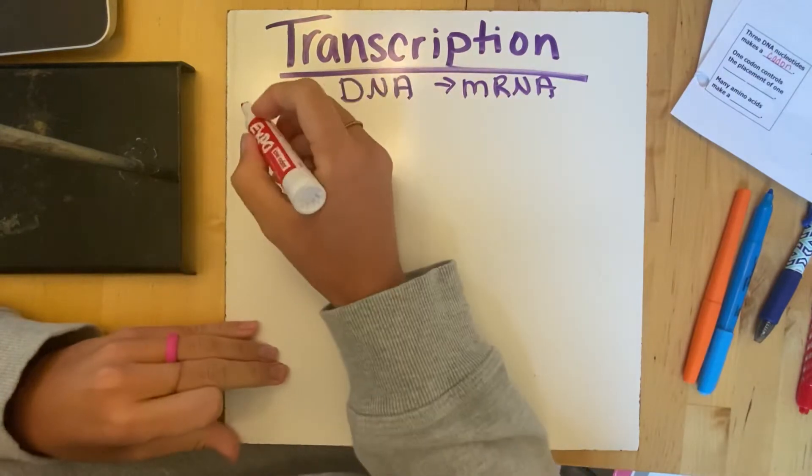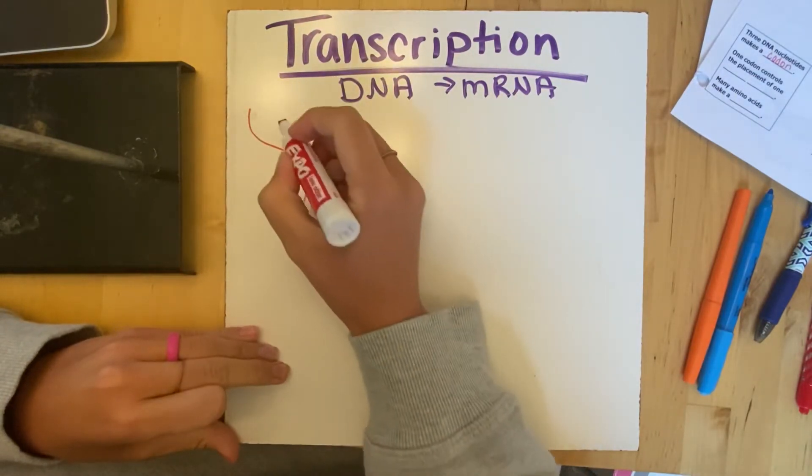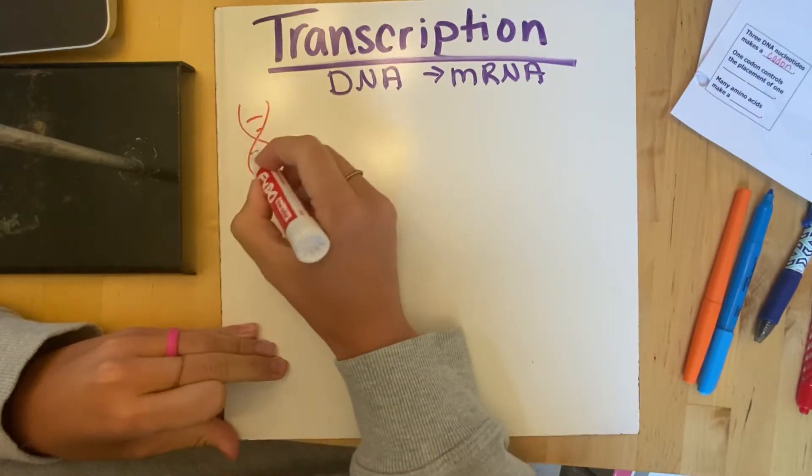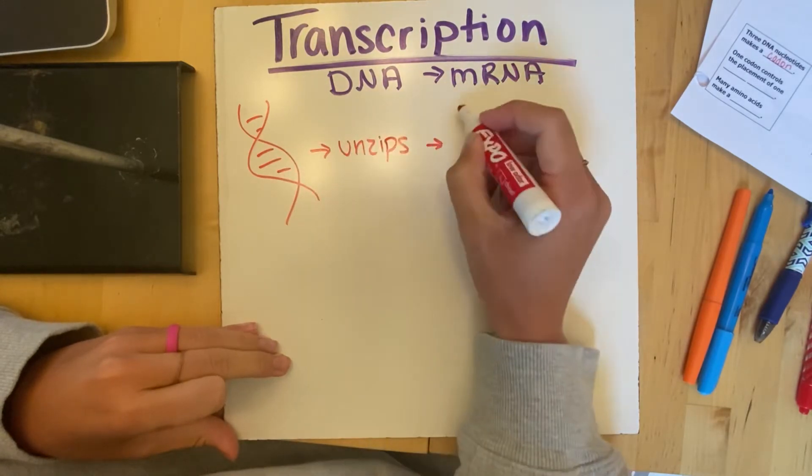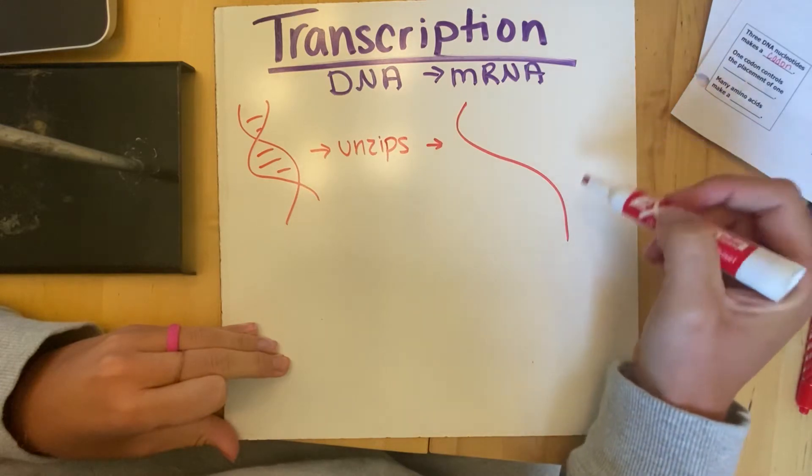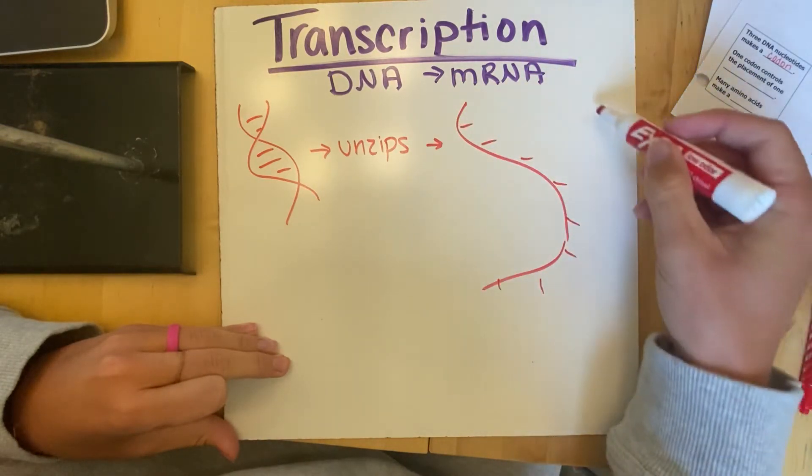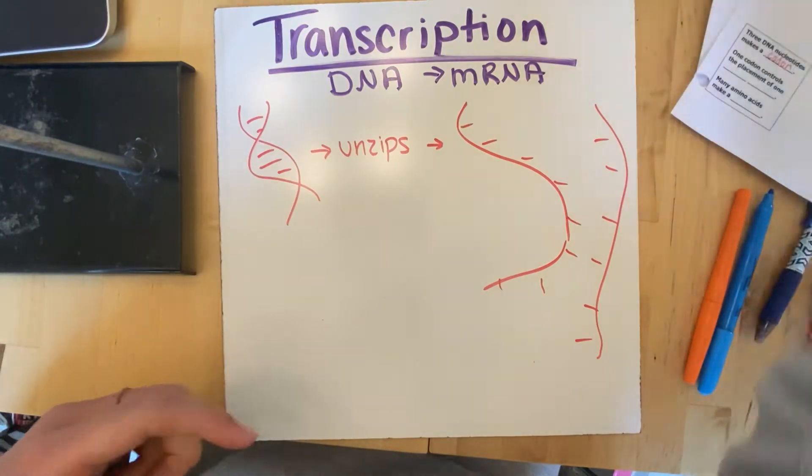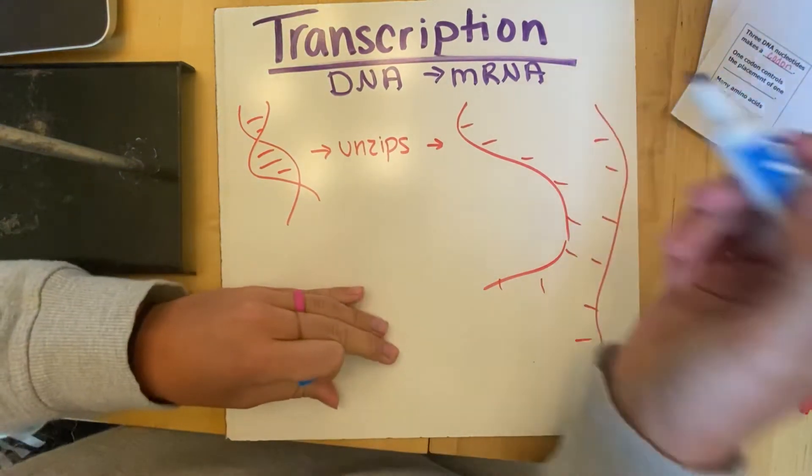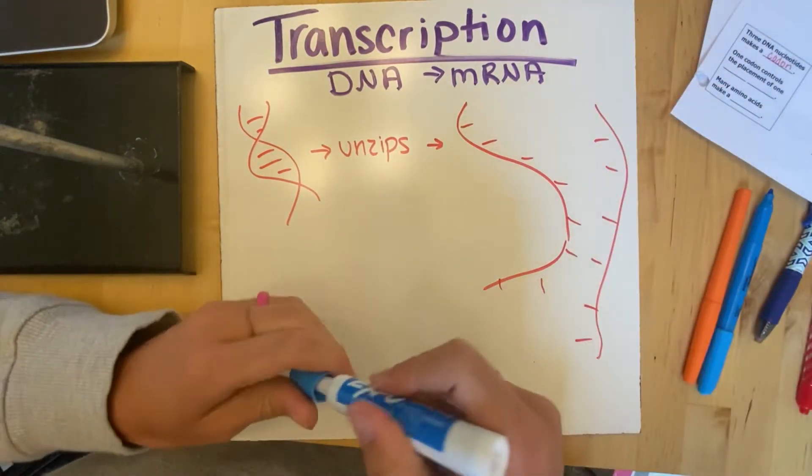So this is the process of transcription. The very first thing we're going to do is look at the fact that our DNA, our double helix, unzips. So our DNA is now completely unzipped. We've got these open nitrogen bases, that one gene. And then our mRNA is going to come in and pair up with those bases that are on the DNA.